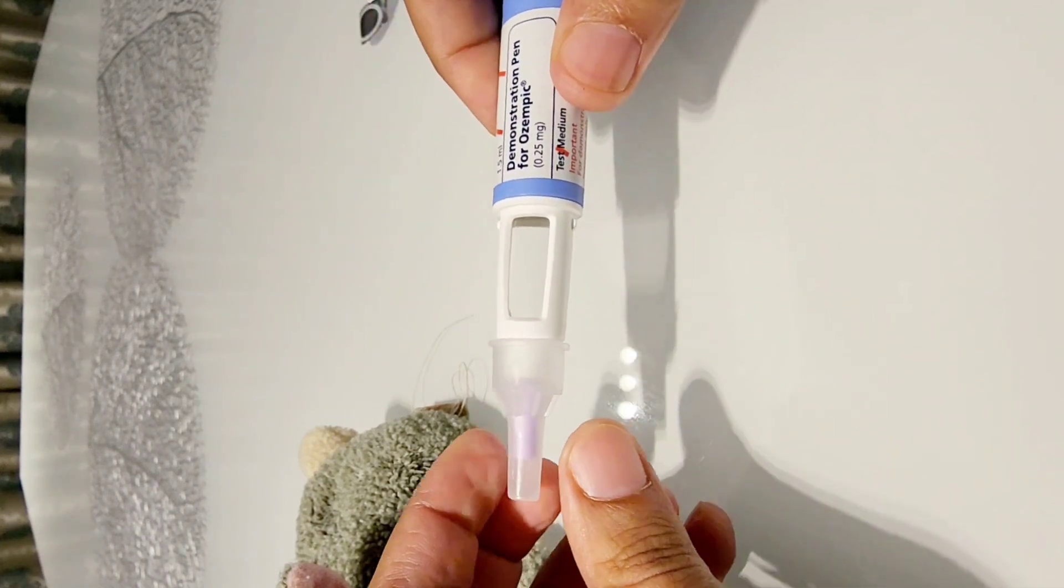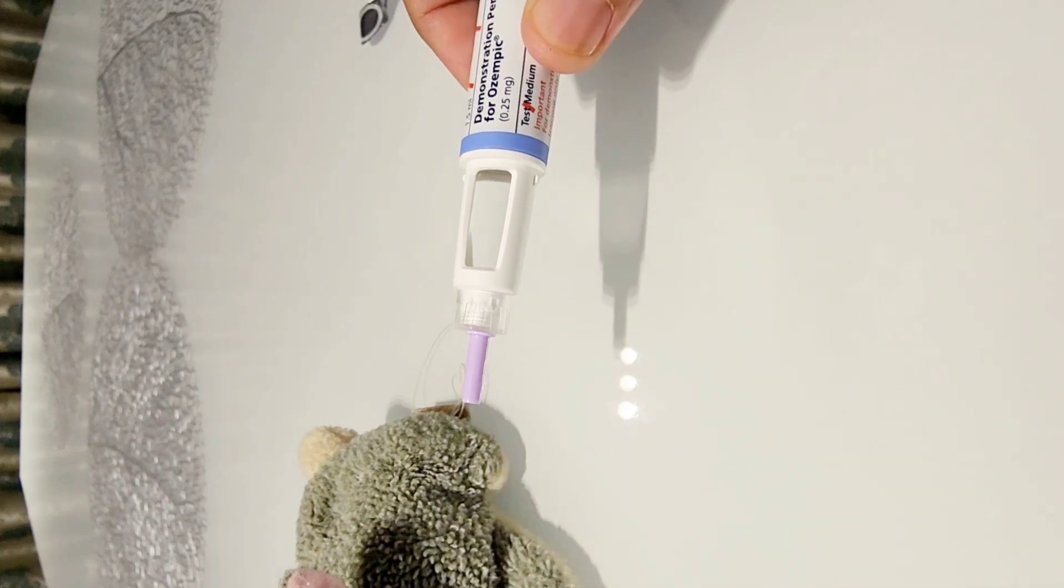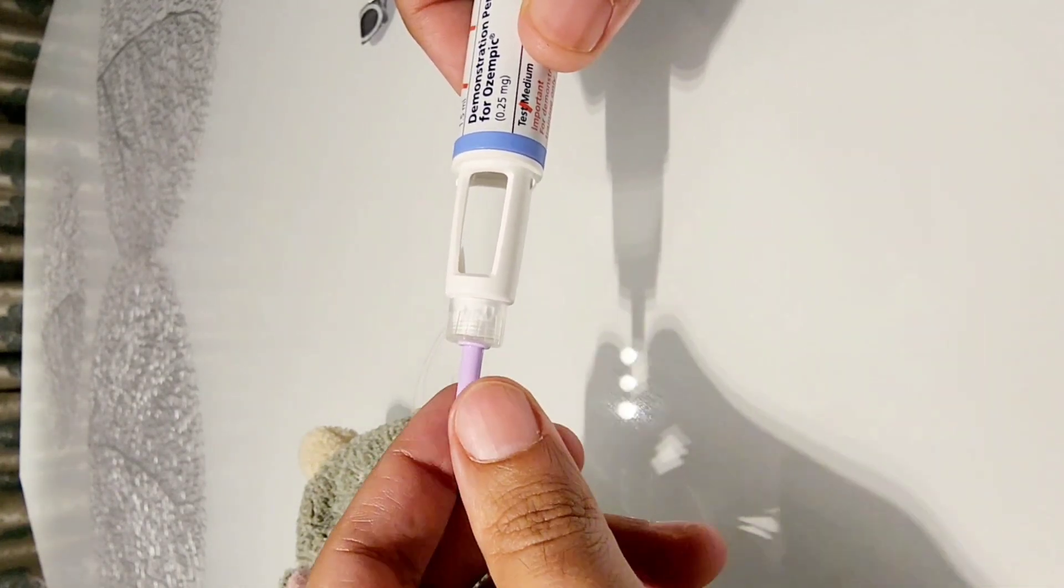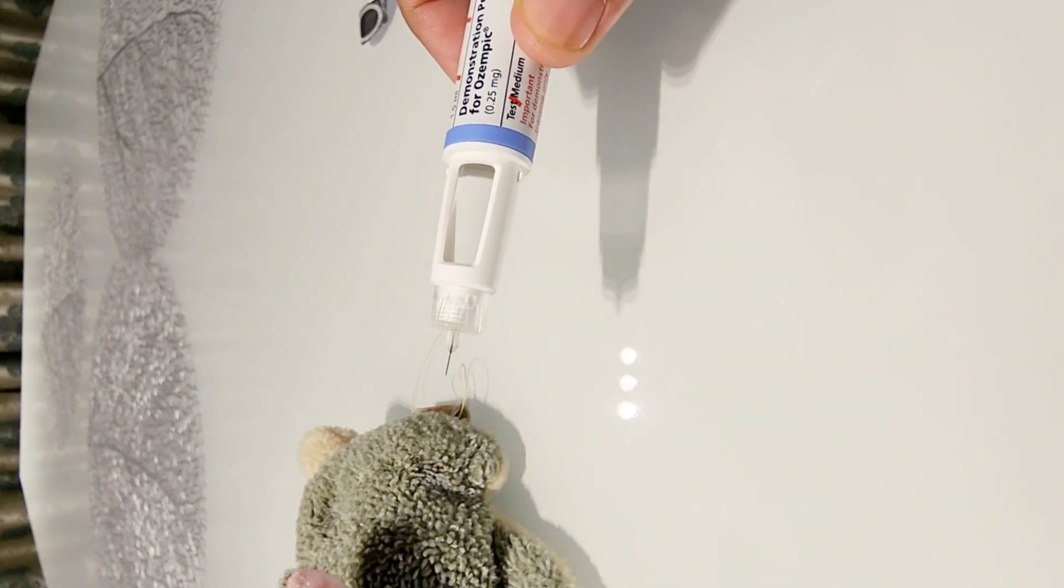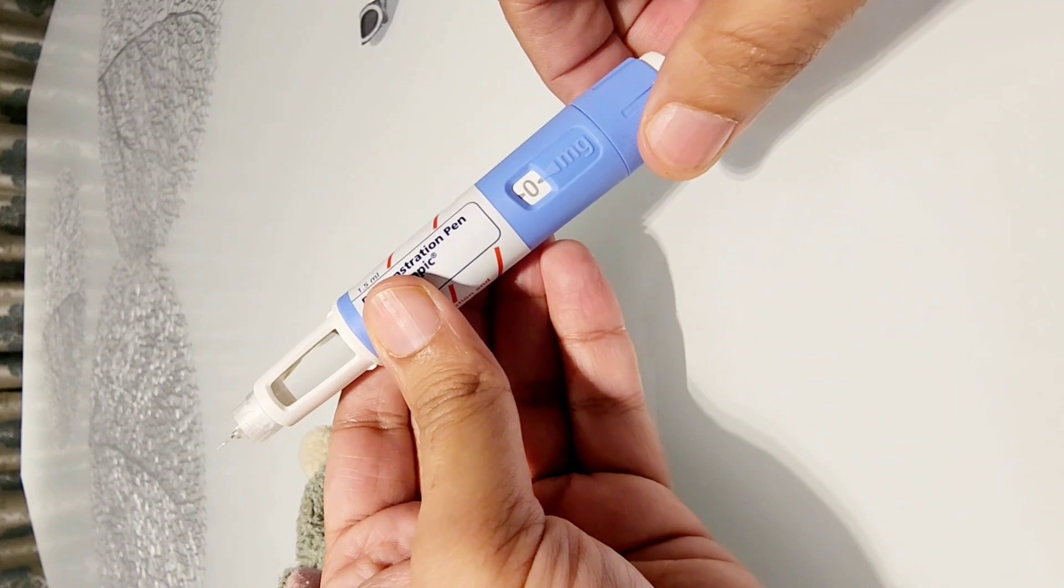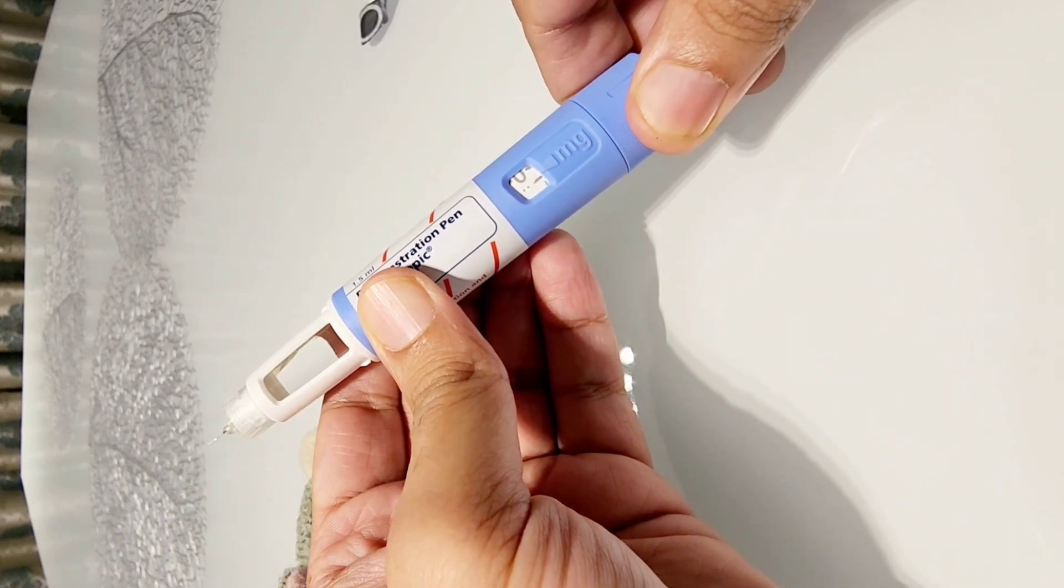Now once it has been nicely screwed we remove this needle. This is the first cap and then there is a protective sheet. Now it is usually advisable that you test the device as well which is to make sure that the needle is working.